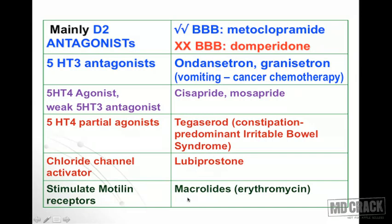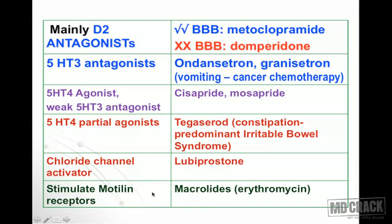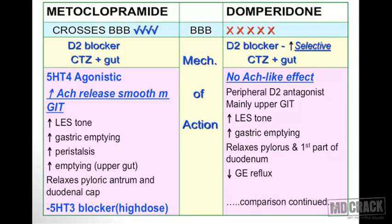There is also a chloride channel activator — lubiprostone — which activates the chloride channel, secretes chloride into the intestinal lumen, accumulates water, and stimulates motility. Macrolides, especially erythromycin, stimulate the motilin receptors in the gut, and motilin is a prokinetic agent, so macrolides act as prokinetics. To review the table: D2 blockers — metoclopramide and domperidone; 5-HT3 antagonists — ondansetron and granisetron; 5-HT4 agonist and weak 5-HT3 antagonist — cisapride and mosapride; 5-HT4 partial agonist — tegaserod; lubiprostone; and macrolides stimulating motilin receptors.